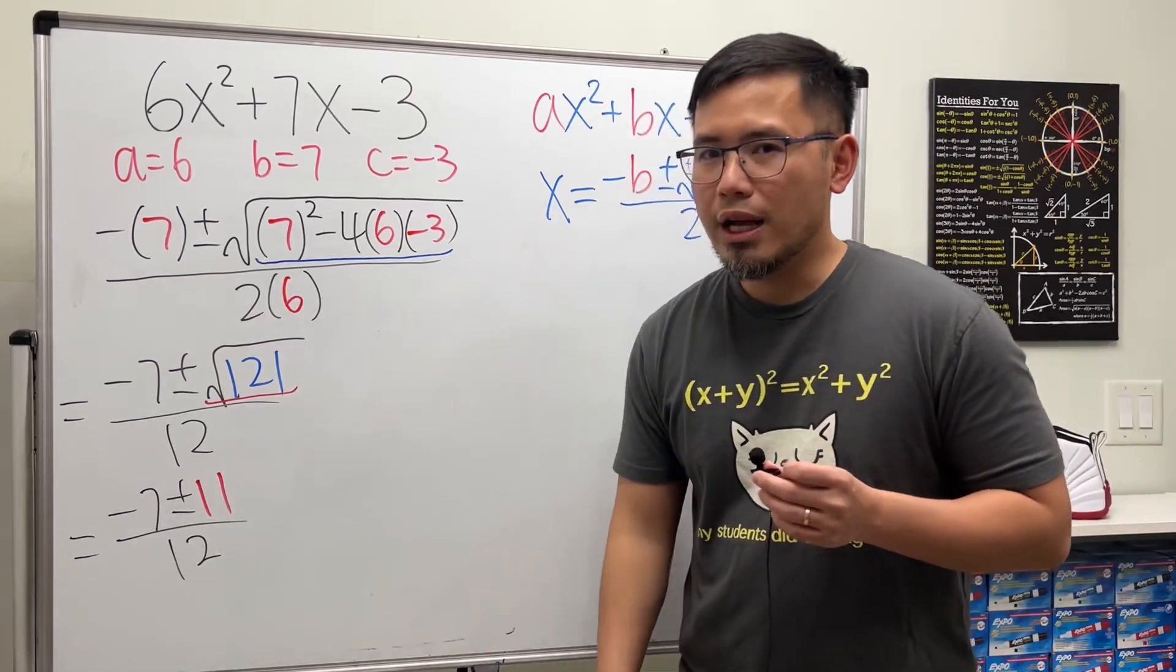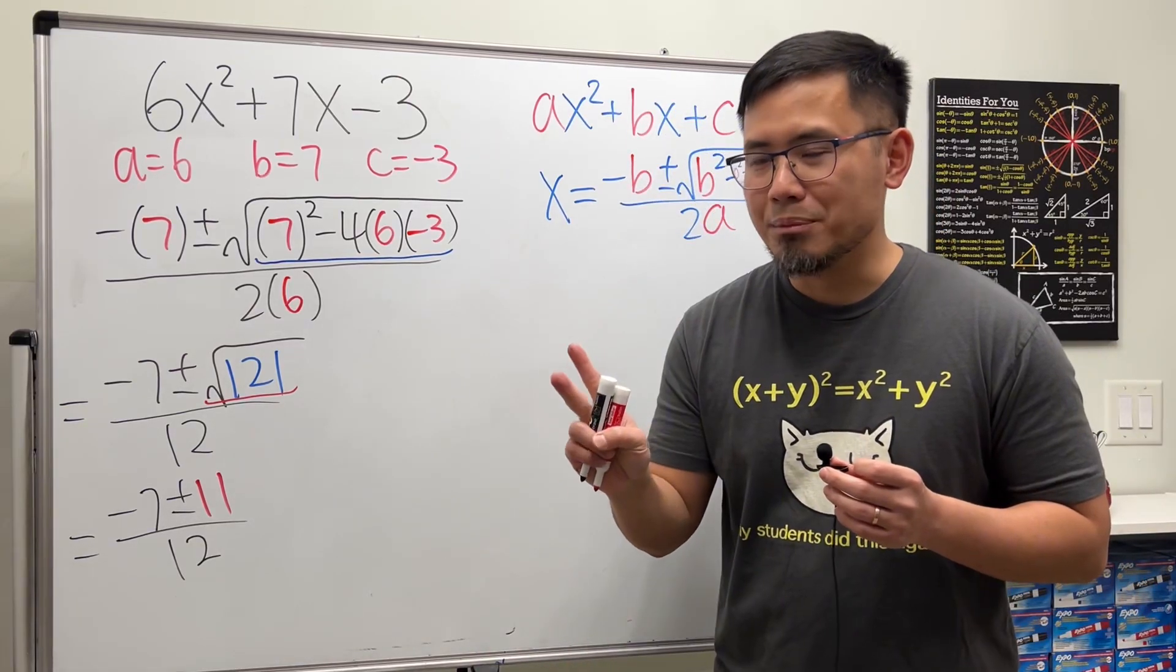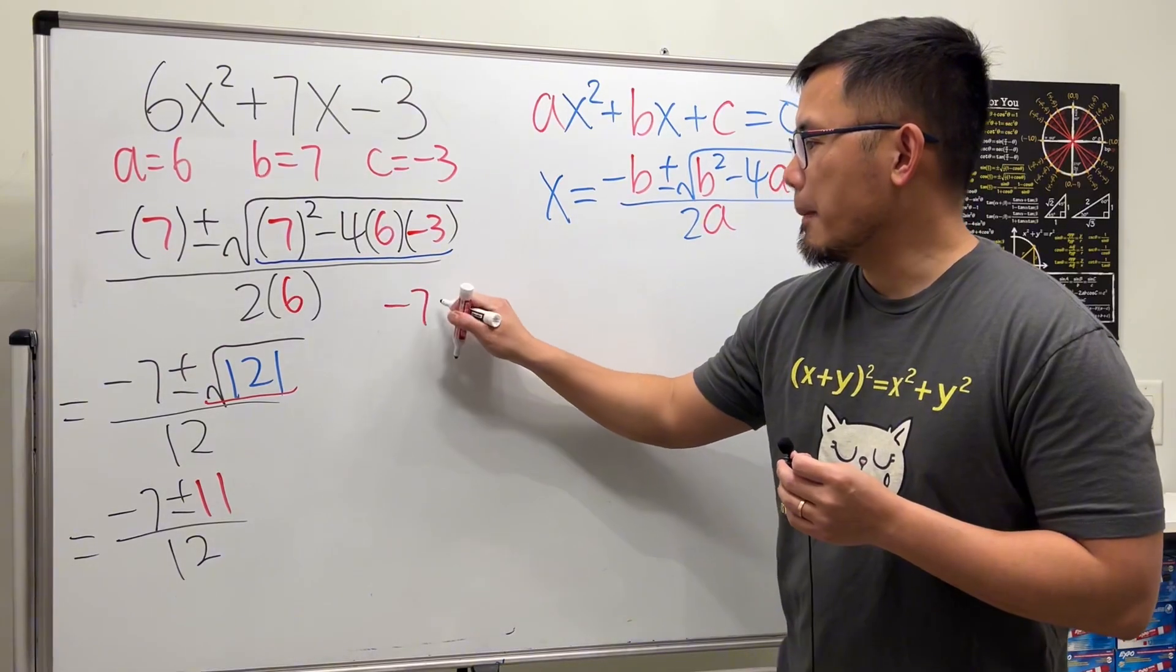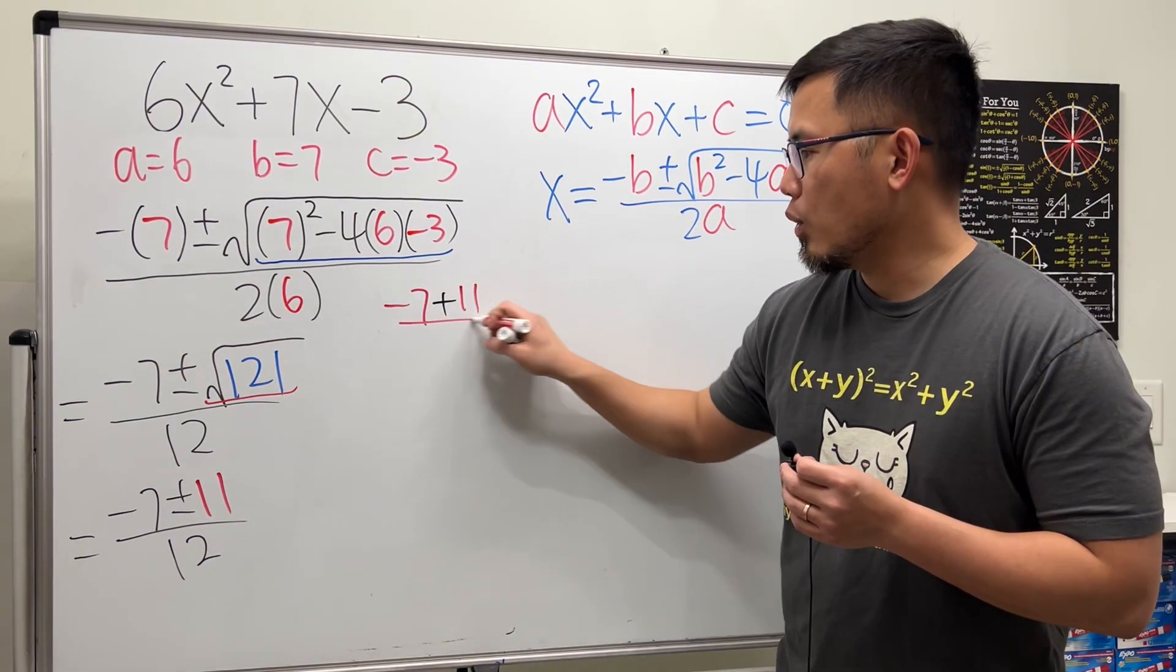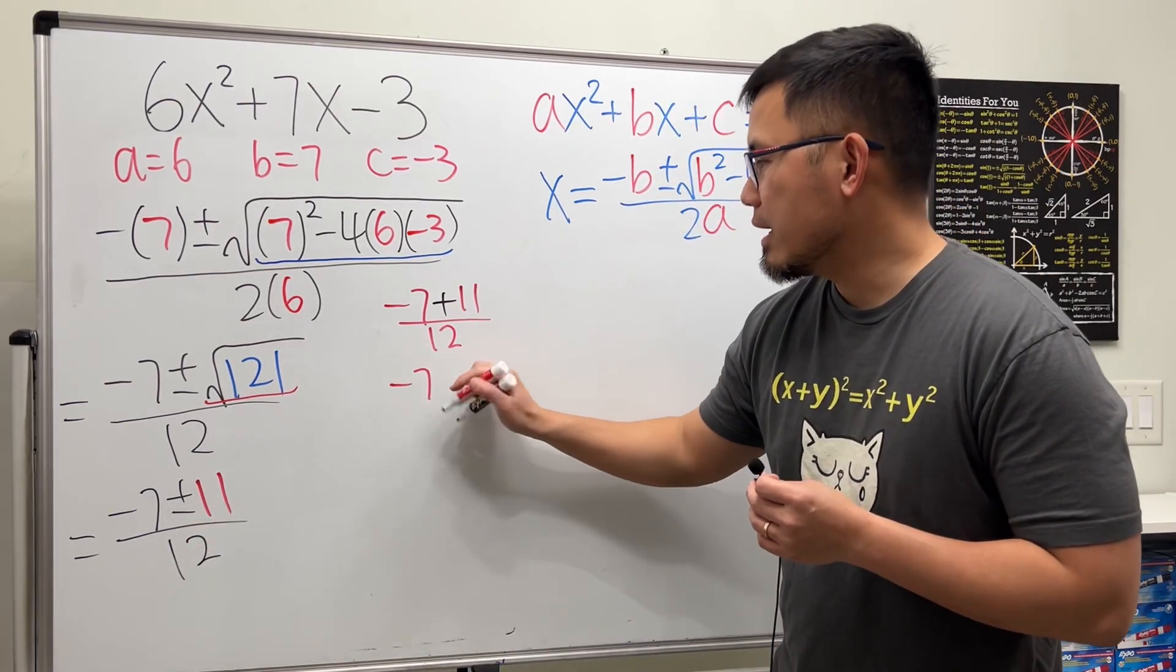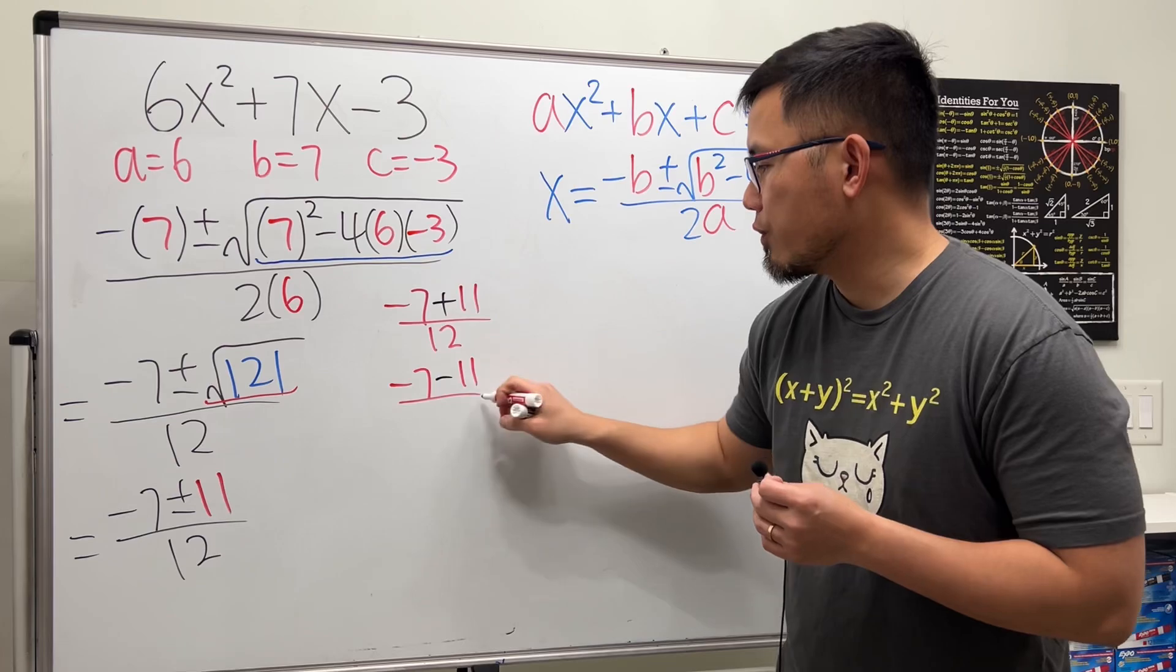Now, this right here actually represents we have to do two numbers, right? The first one is with the plus. Negative 7 plus 11 over 12. And the other one is with the minus. Negative 7 minus 11 over 12.